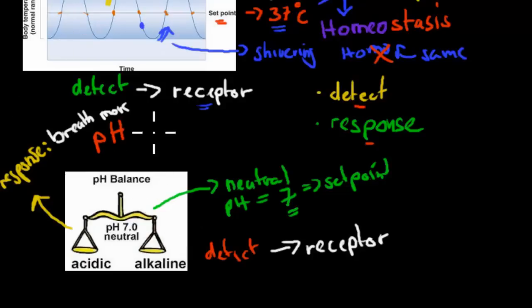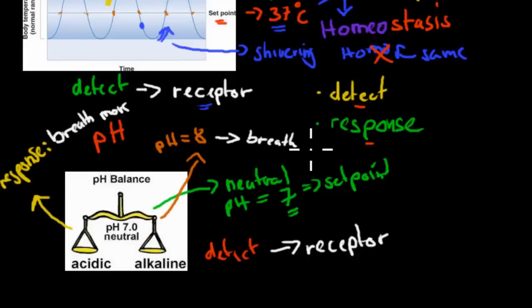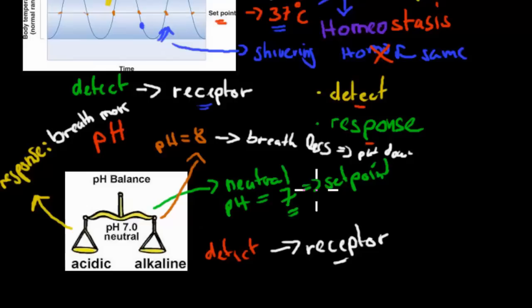And if our pH is too high — say, 8 — the response will be to breathe less. That keeps CO2 inside our body and brings our pH down. So again, we have a set point of about 7. If it's too high or too low, there will be a detection part — receptors that detect the change — and then a response to bring it back to normal levels.